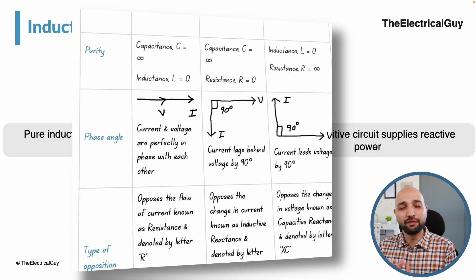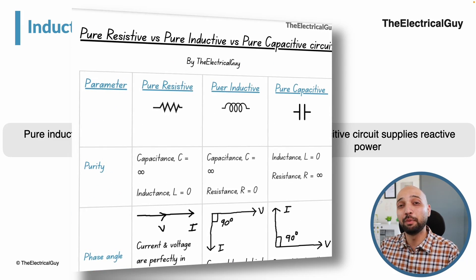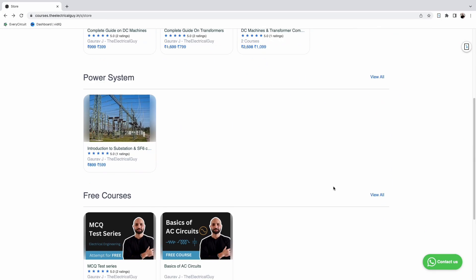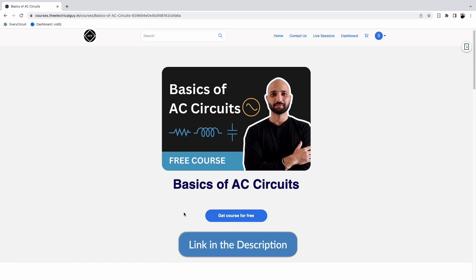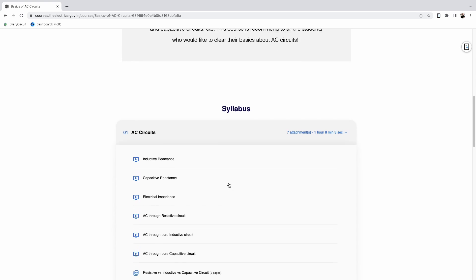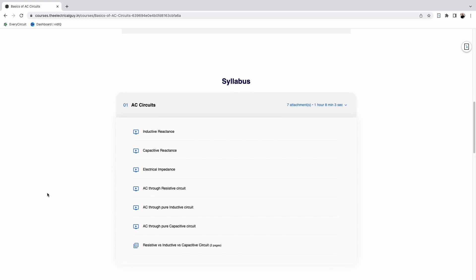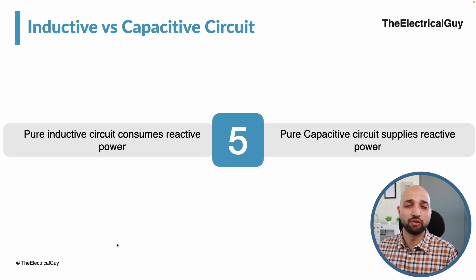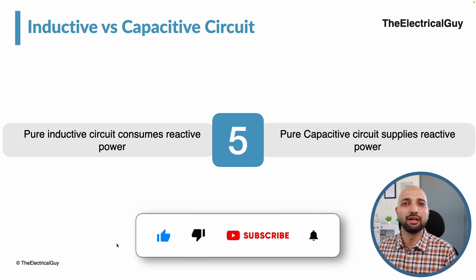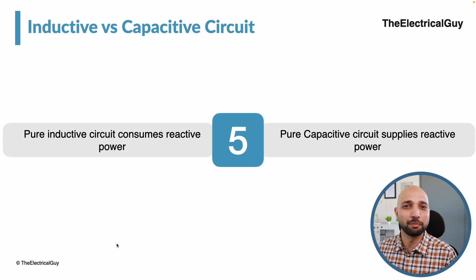A PDF comparing purely resistive, purely inductive, and purely capacitive circuits is available for free on the website or the official app — links are in the description. Sign up and join the free AC Circuits Basics course to download it. If you found this content helpful, please comment below and like the video to help it reach other viewers. Thank you for watching — keep watching, keep learning.